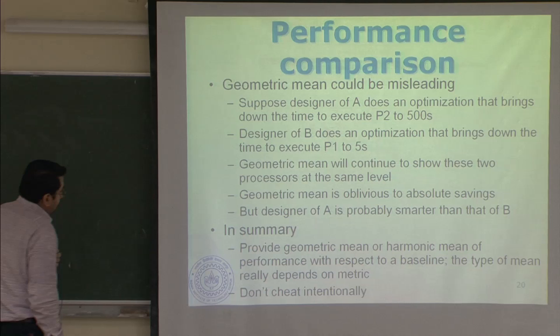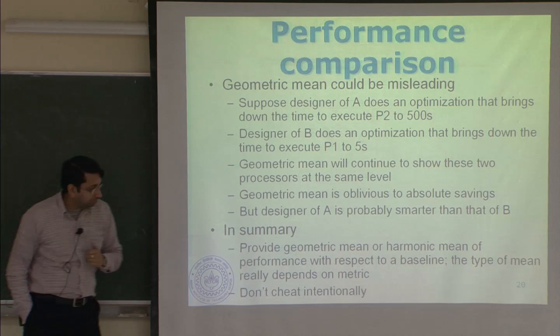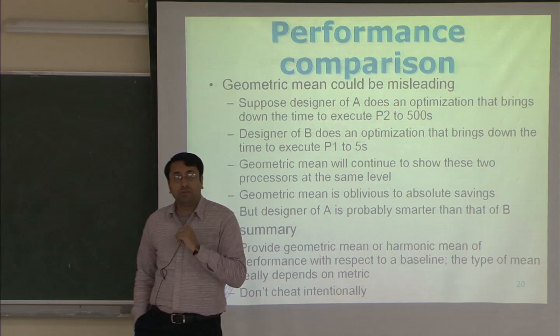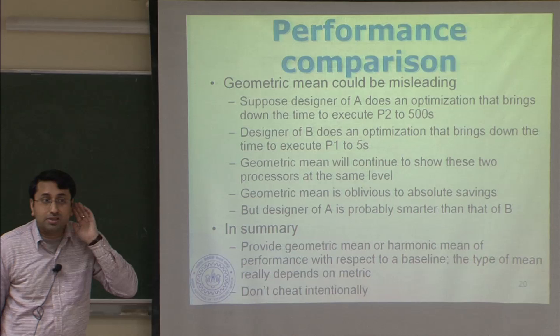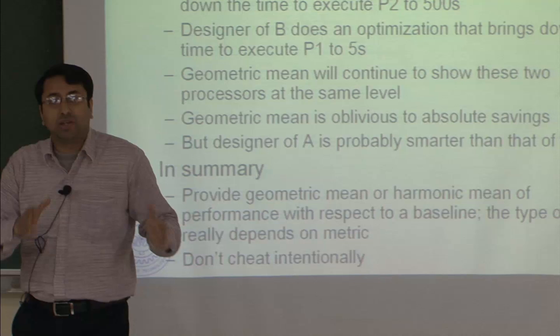The reason geometric mean is preferred is that the geometric mean of a ratio is the same as the ratio of the geometric means of the numerator and denominator, which makes it easier to evaluate. People often use harmonic mean as well. How are these ordered? The arithmetic mean is the largest, then geometric mean, then harmonic mean. Harmonic mean has the good property that it usually gives a conservative estimate of performance improvements because it is the lowest of all the means.